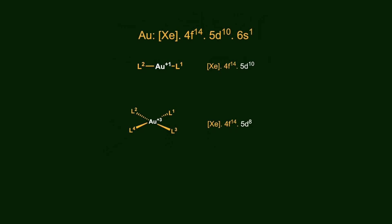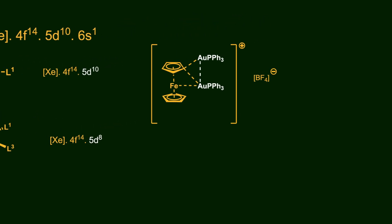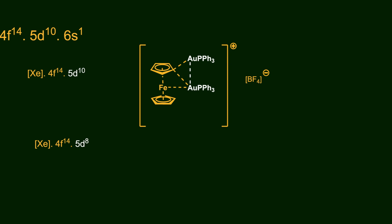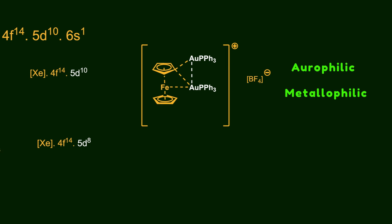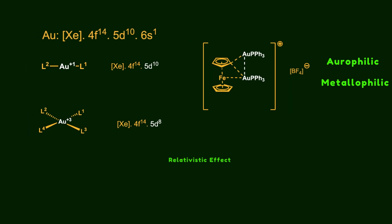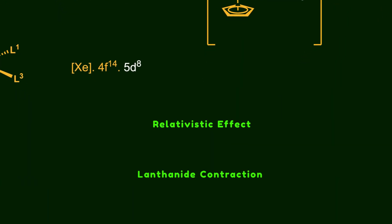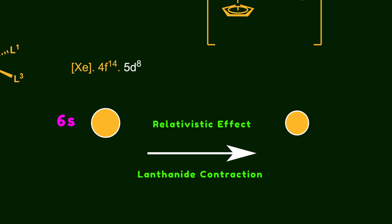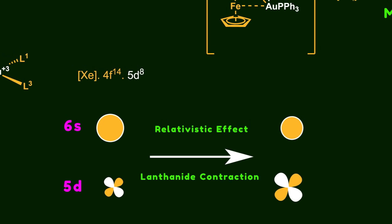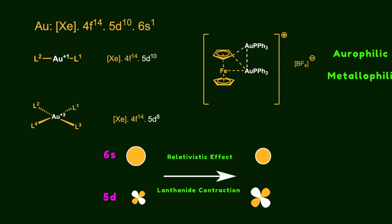Another fascinating feature of gold(+1) compounds is their strong tendency to interact with neighboring gold(+1) centers or other heavy metals, forming multi-metallic aggregates through aurophilic, or more generally, metallophilic interactions. These interactions arise due to relativistic effects and lanthanide contraction, which cause the contraction of the 6s and 6p orbitals while expanding the 5d shell. This shift in electron density enhances both pi acidity and pi backbonding, making aurophilic interactions a remarkable consequence of these effects.